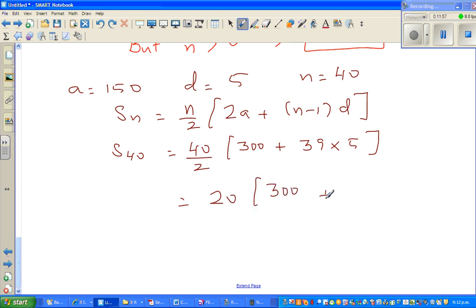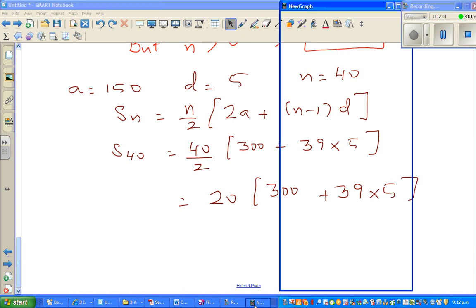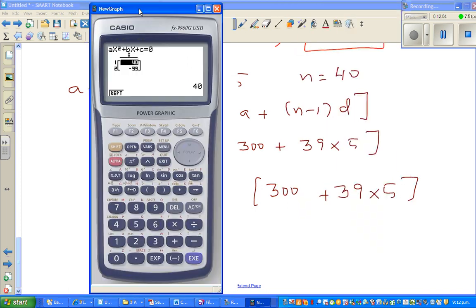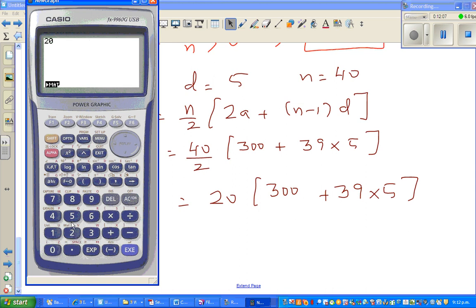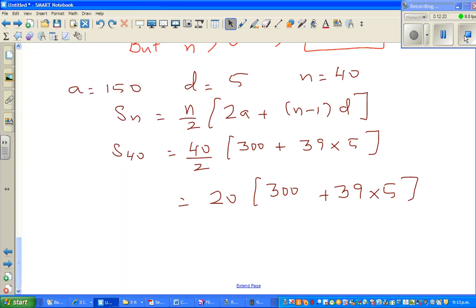Which is 20 times (300 plus 39 times 5). Now use a calculator: menu, run, 20 bracket 300 plus 39 times 5, close the bracket. Exactly 9900. So the answer is right and you should be happy with your answer. See you in the next video.